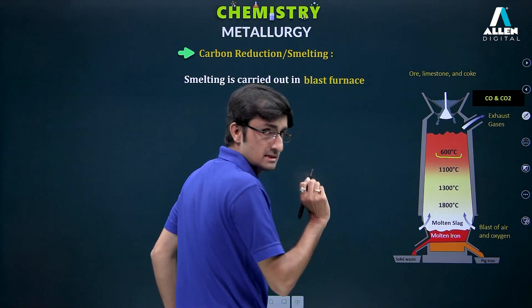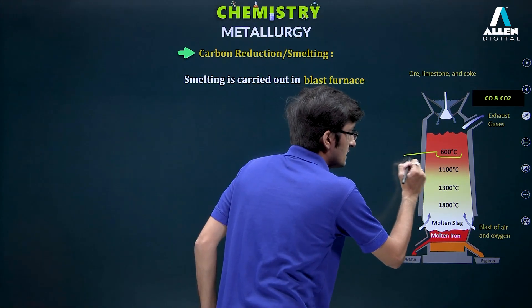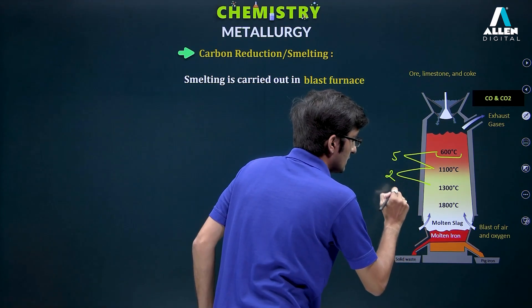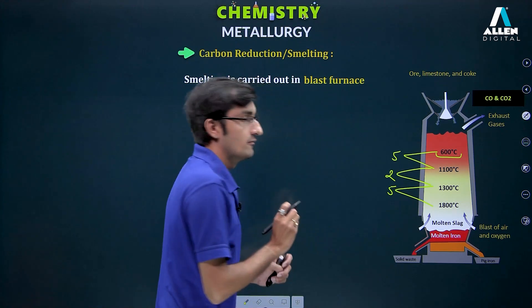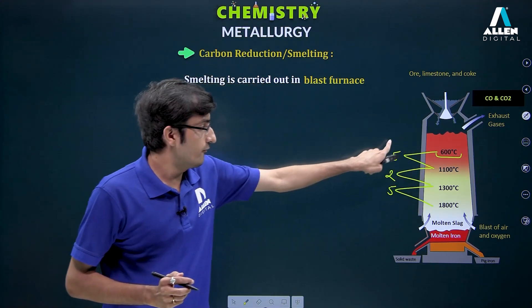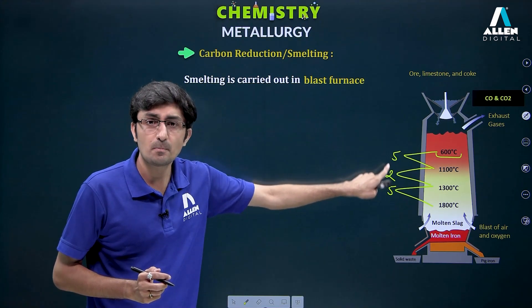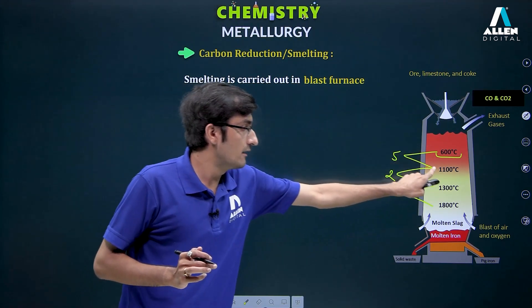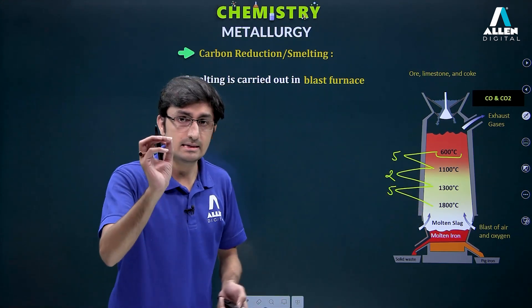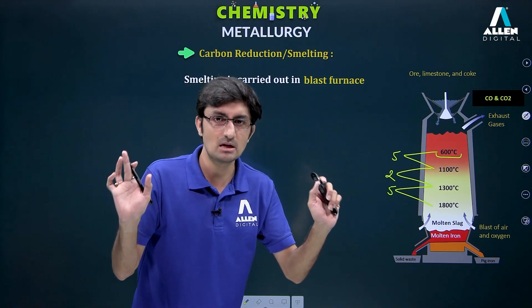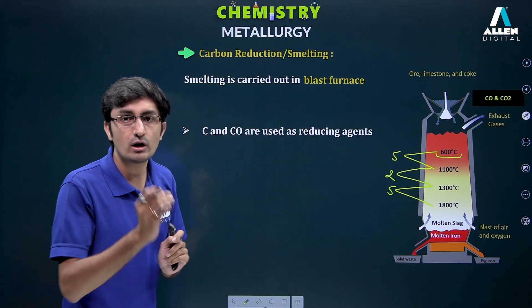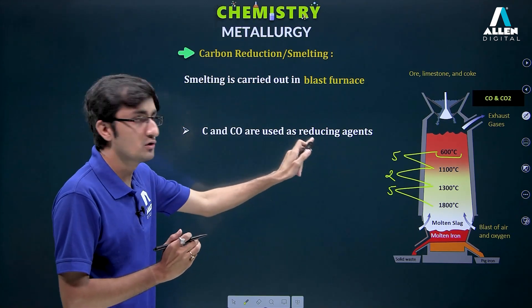From the NCERT point of view, you need to learn the temperatures. Here is a trick: start with 600°C. The first digits of the temperatures are 6, 11, 13, 18 — add 5, then 2, then 5 to get each next first digit. So the temperatures are 600°C, 1100°C, 1300°C, and 1800°C. This makes it easy to remember. As mentioned, C and CO act as reducing agents which reduce metal oxide to metal.